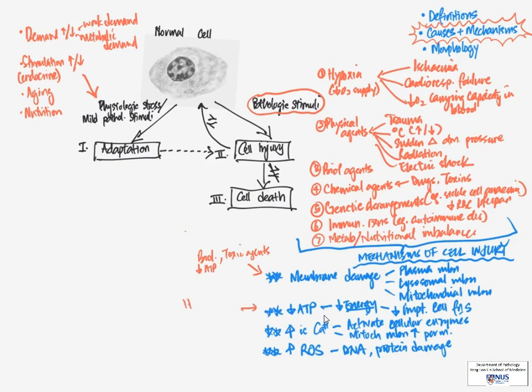Some of the causes that can deplete ATP include hypoxia, so oxygen deprivation, as well as chemical toxins.